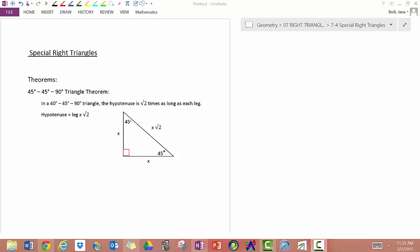They are isosceles right triangles. If it's isosceles, the legs are congruent, and these angles are 45 degrees each. So we also call this kind of a triangle a 45-45-90 triangle. Again, the side opposite to the right angle is the hypotenuse.